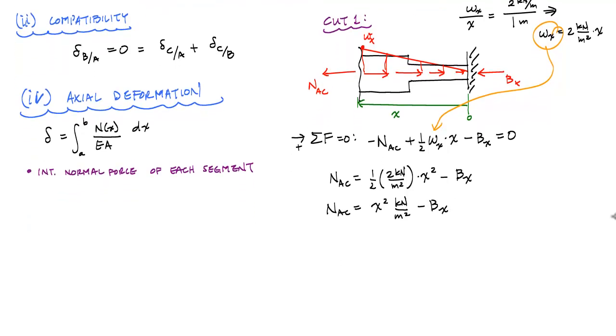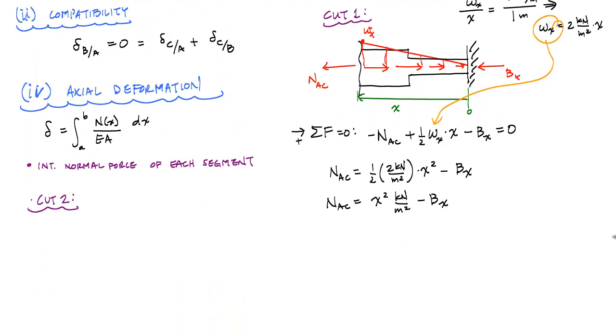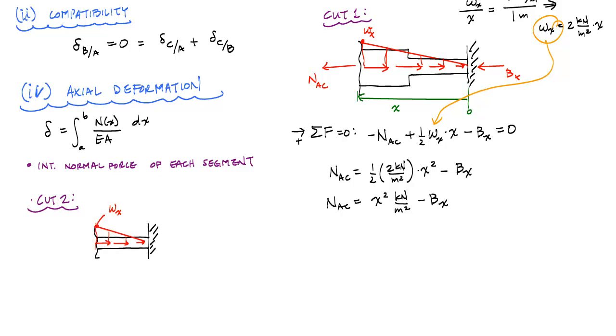Now if I repeat the process for cut 2, and I use the same coordinate system. So here's cut 2. And I draw the free body diagram on the right. And I use another coordinate system where this is 0. And here, at the distance to my cut, I'm going to say is x. And I have an internal force resultant. I'll call this NCB. And here is my Bx.